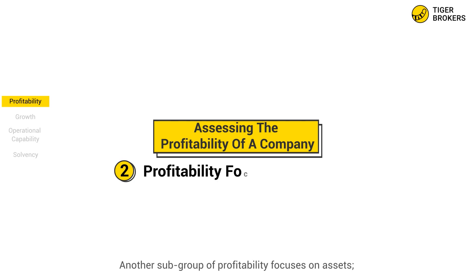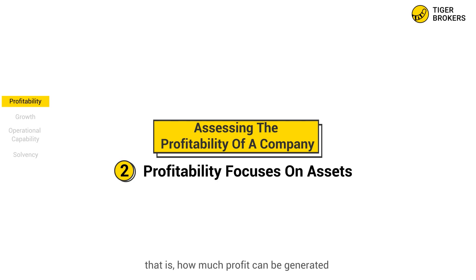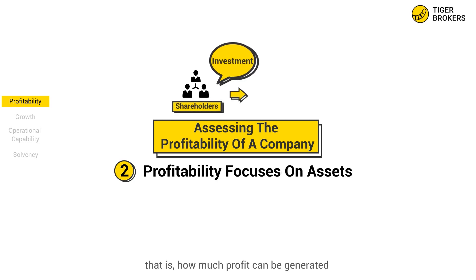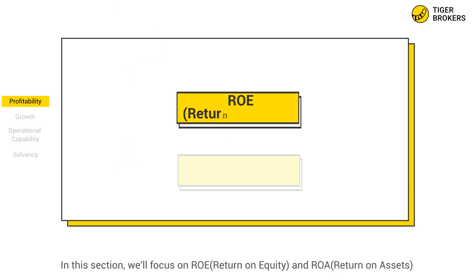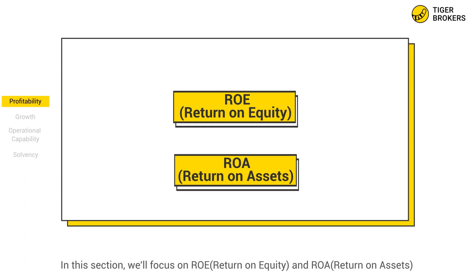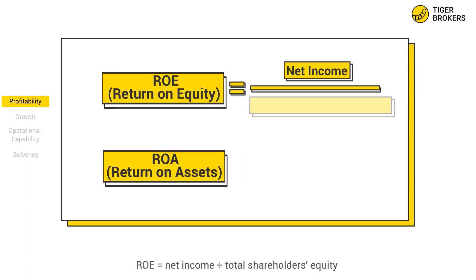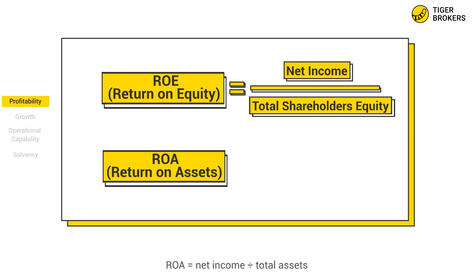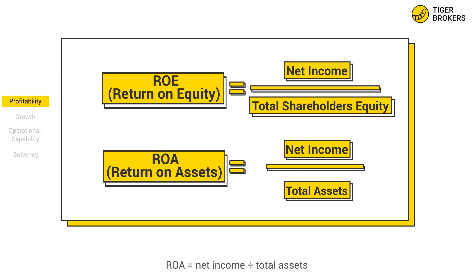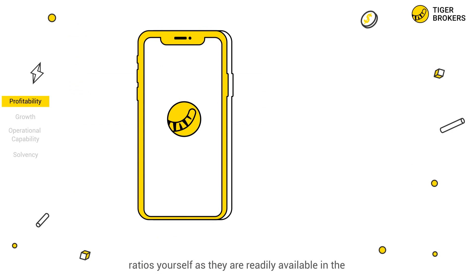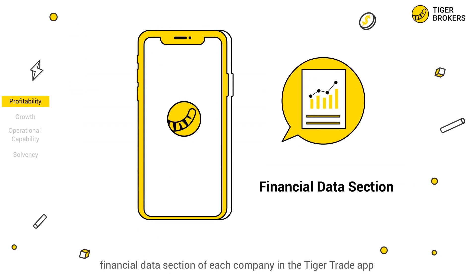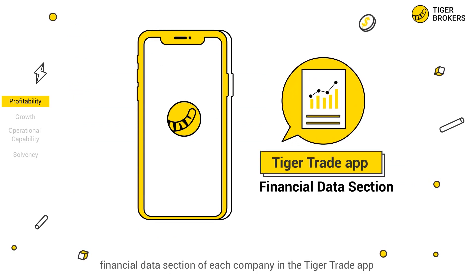Another subgroup of profitability focuses on assets — that is, how much profit can be generated on the investment of shareholders. In this section, we'll focus on ROE and ROA. ROE equals net income divided by total shareholder's equity. ROA equals net income divided by total assets. In practice, you won't need to actually calculate these ratios yourself, as they are readily available in the financial data section of each company in the TigerTrade app.